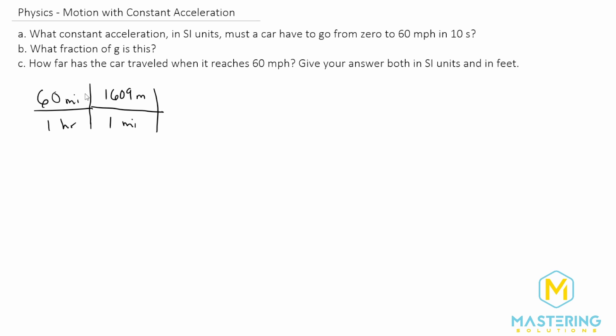So now we have miles to meters on top which is what we want, and we want hours to seconds. In that useful data section they tell us that one hour is 3600 seconds. So now the hours will cancel and we have meters on the top, seconds on the bottom, which is what we need.